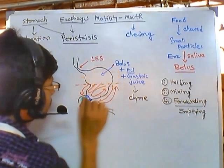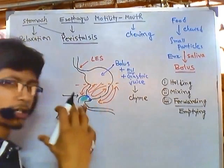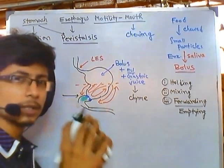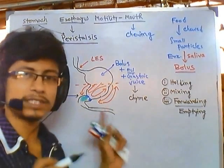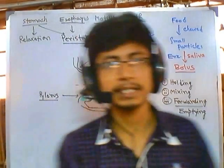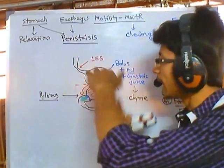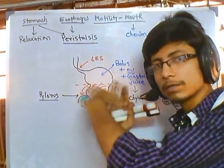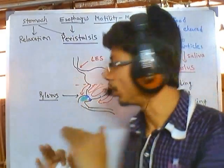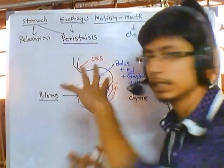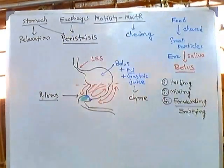The junction of the stomach and duodenum is called the pylorus, which is a muscular constriction and acts as a control point. When the duodenum and small intestine are ready, they signal the stomach, and through the pylorus the peristalsis keeps moving forward, migrating food through the pylorus into the duodenum. That is the motility process carried out in the stomach.